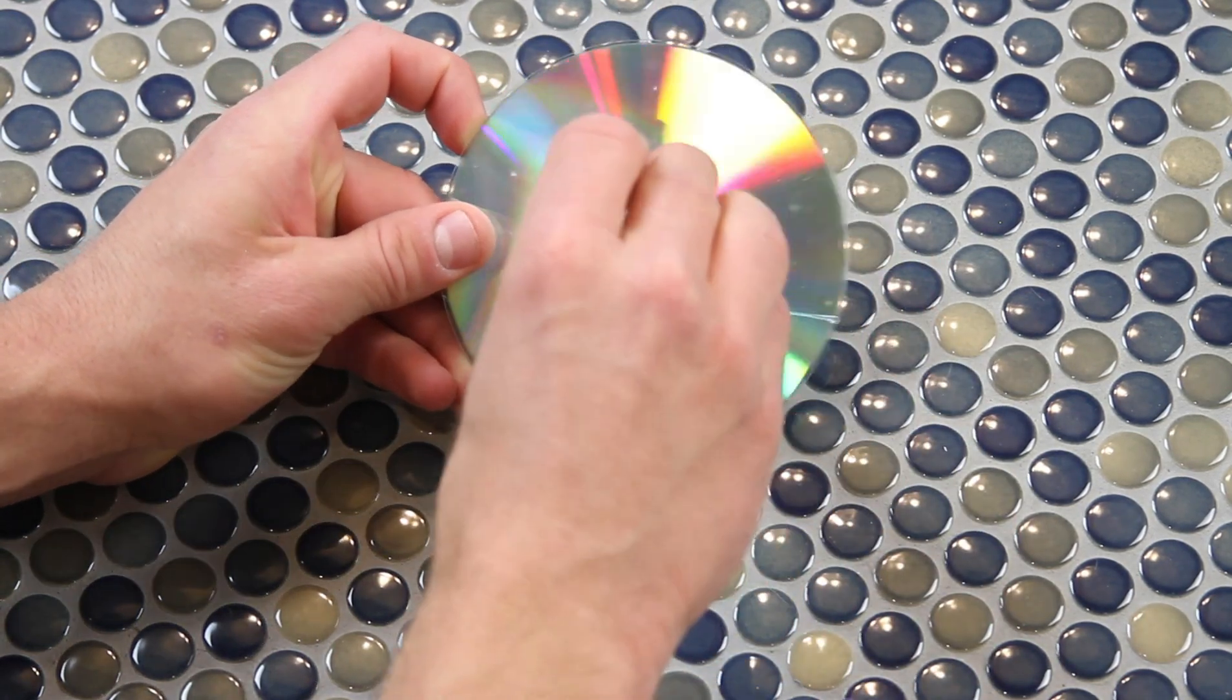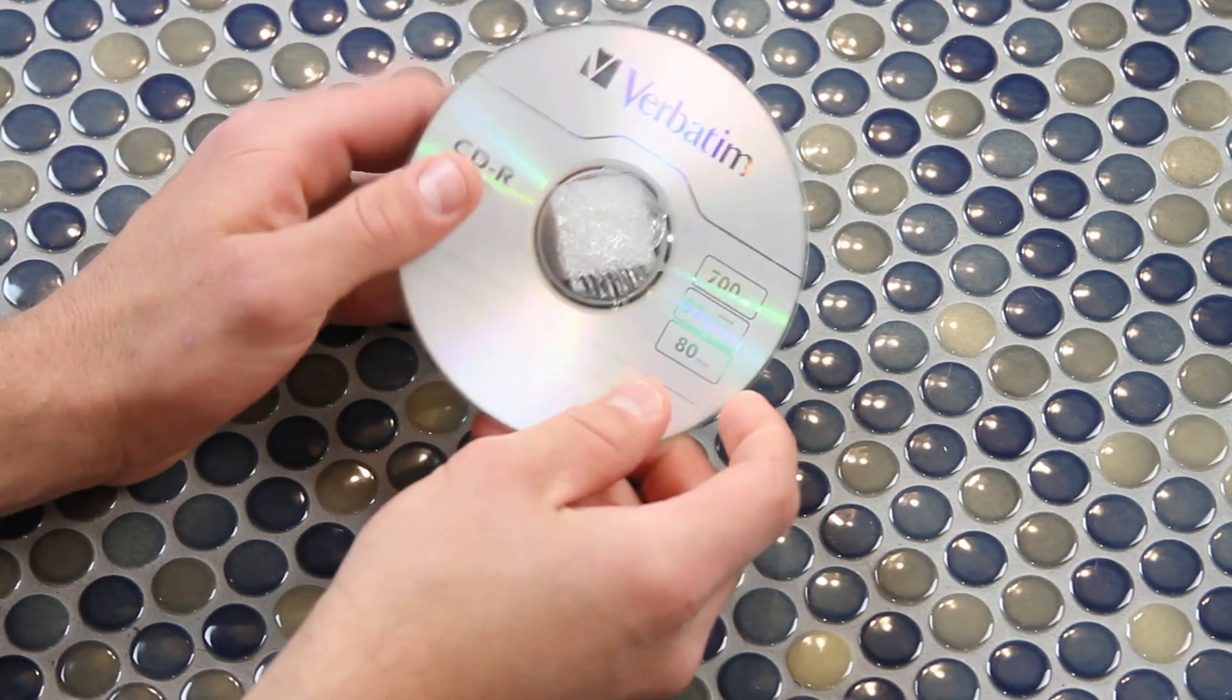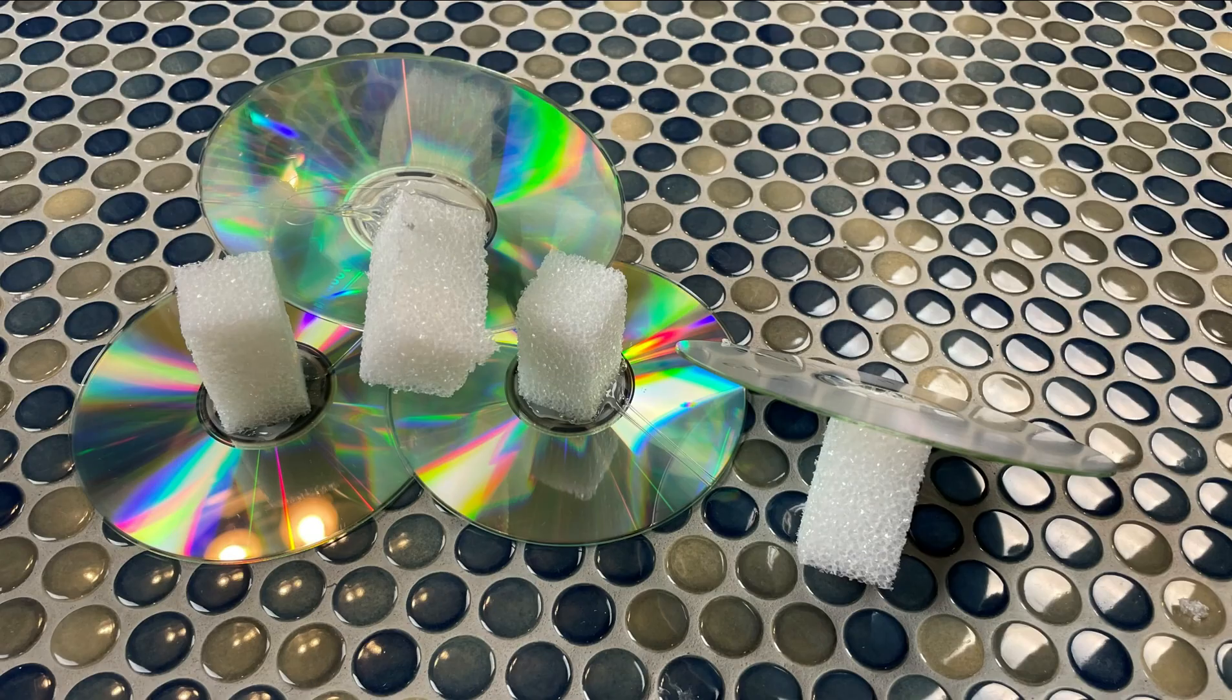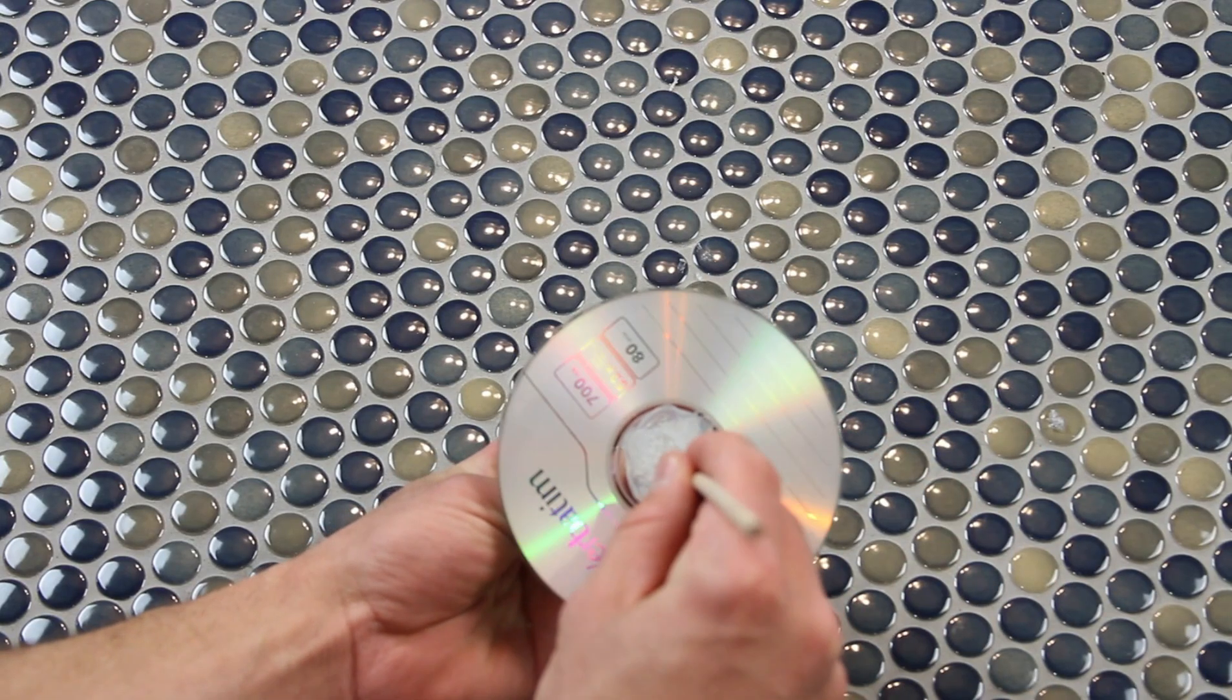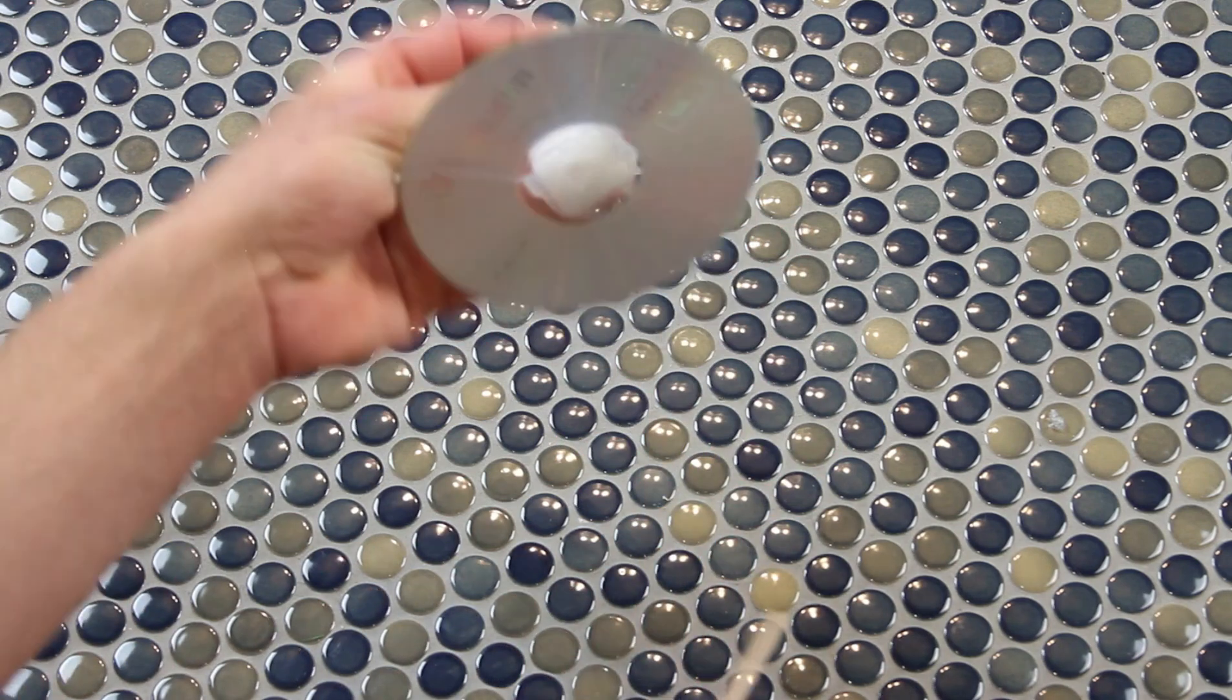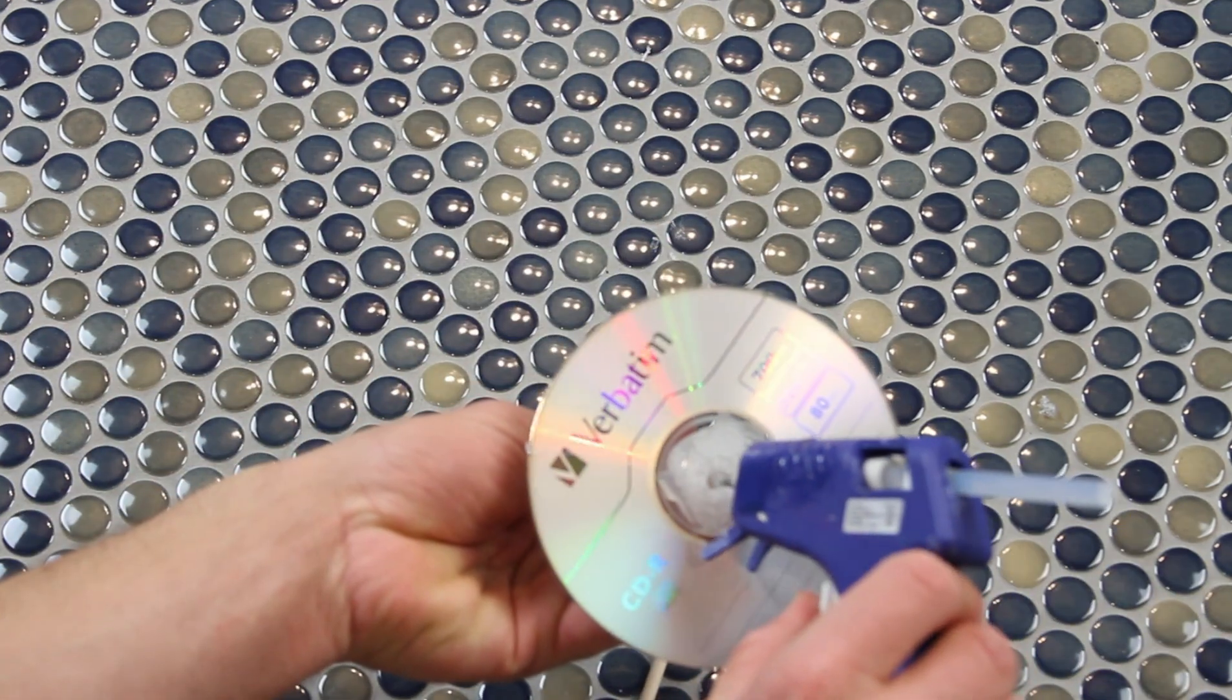Take your time on this part, friends. Now we want to stick that dowel through that foam cube. We say take your time because it's really important you try to do so as straight as possible. Then you can pull it back out, fill that hole you just made with hot glue, and stick it back in there.